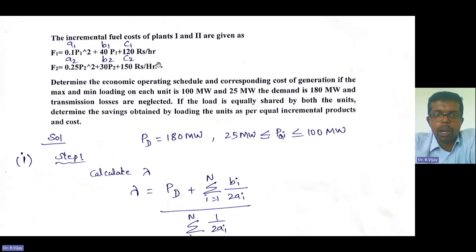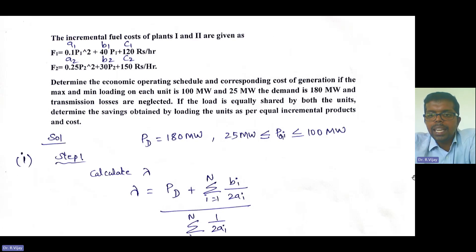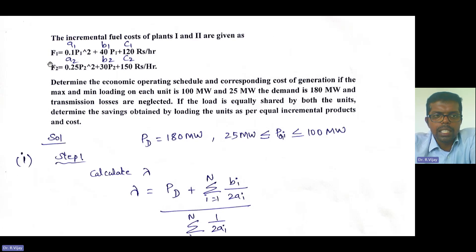This is the data given in the problem. The demand is clearly given as 180 megawatt. Minimum and maximum operating limits are also given: 25 megawatt ≤ PGi ≤ 100 megawatt. To solve using the lambda iteration method, you need to mark A1, B1, C1, A2, B2, and C2 from the incremental fuel cost functions F1 and F2 given in the problem.